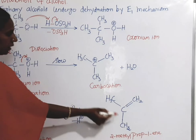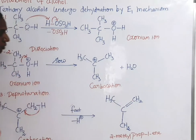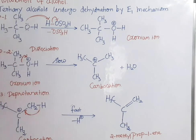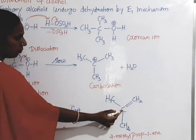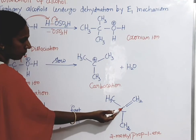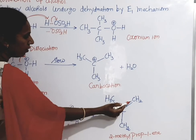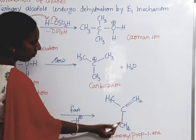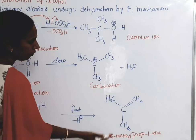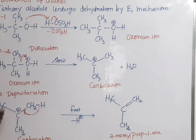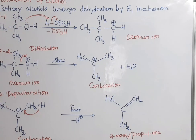So CH3-C(CH3)=CH2. This is the name: 2-methylprop-1-ene. That is the formula where CH3 is at position 2, double bond at position 1. So that one hydrogen is replaced - we're talking about 2-methylprop-1-ene. This is the protonation of alcohol by E1 mechanism.